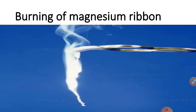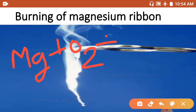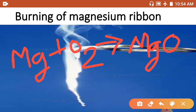Here is one example: burning of magnesium ribbon. When we burn magnesium ribbon in the air, it produces heat and light and we get magnesium oxide. Here is the chemical equation of burning of magnesium: Mg burns in air (O₂) and gives us magnesium oxide (MgO) and heat.